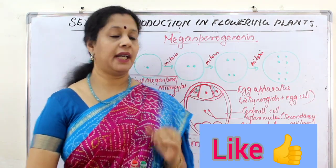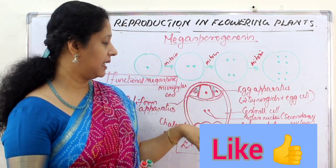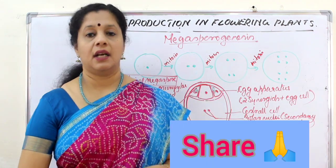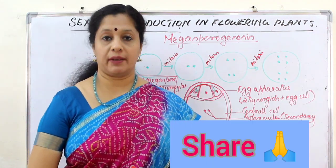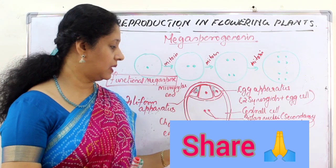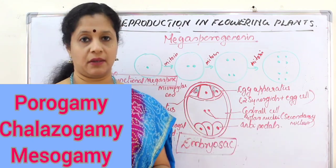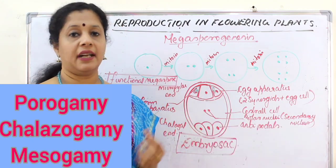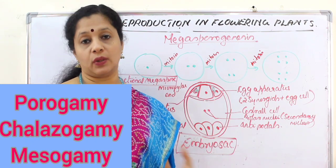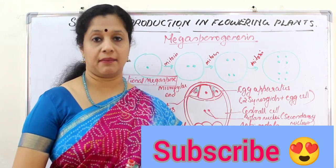The most common type of entry of the pollen tube into the female embryo sac is through the micropylar end — that is called porogamy. In certain cases it may come through the chalazal end — that is called chalazogamy. In very rare cases it can be through the funicle region or through the integument — that is called mesogamy.